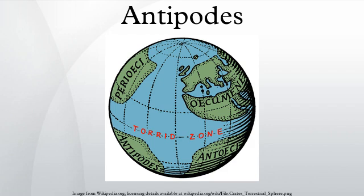In geography, the Antipodes of any place on Earth is the point on the Earth's surface which is diametrically opposite to it. Two points that are antipodal to each other are connected by a straight line running through the center of the Earth. In the Northern Hemisphere, the Antipodes is often used to refer to Australia and New Zealand, and Antipodeans to their inhabitants.